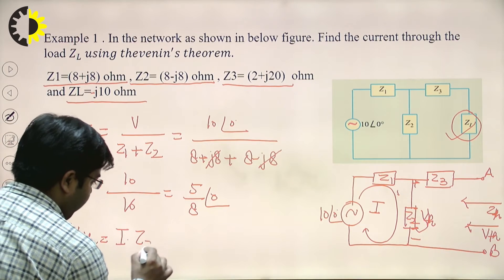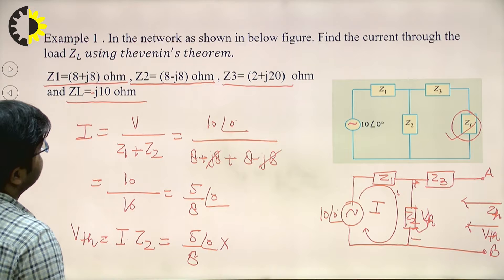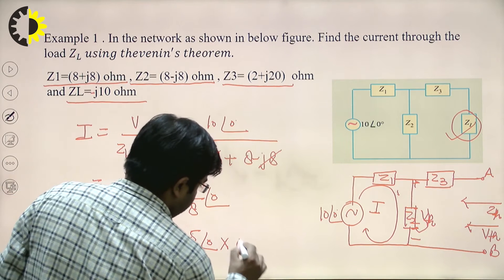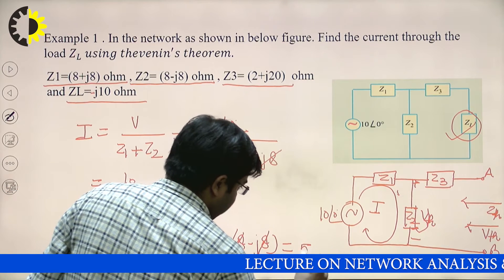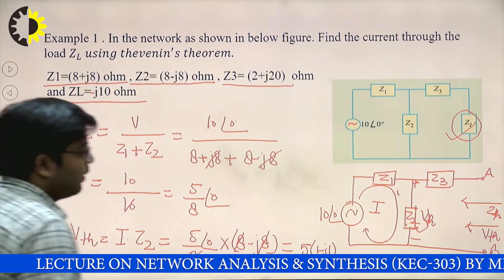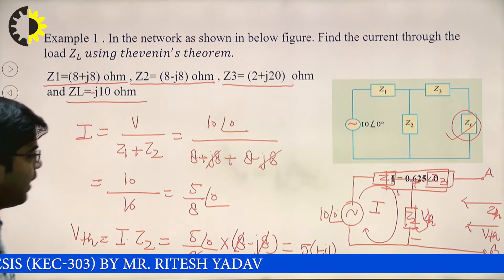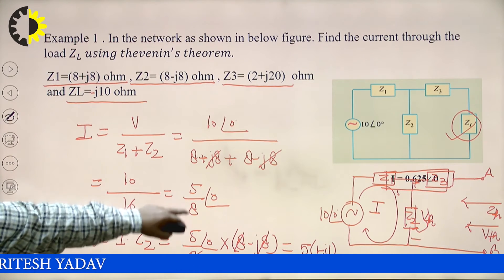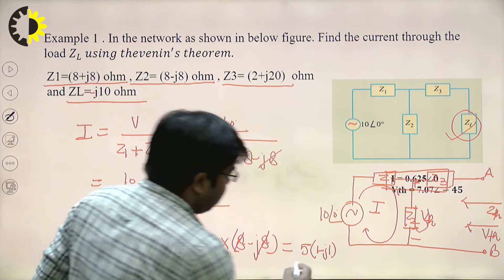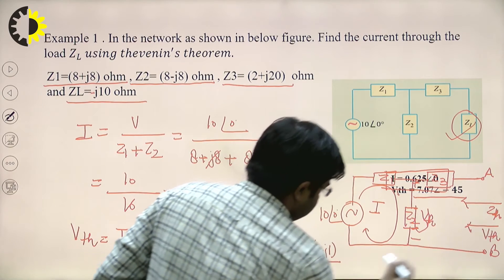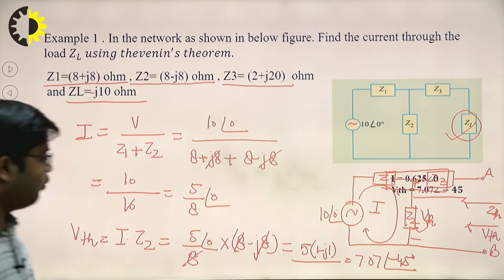V_TH = I × Z2 = (0.625 at angle 0) × (8 − j8). After calculating, I = 0.625 at angle 0, and when you multiply by Z2 you get V_TH = 7.07 at angle −45 degrees. This is the value of V_TH.